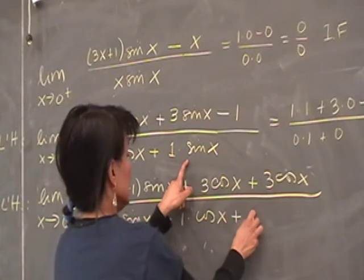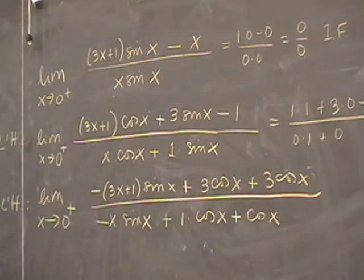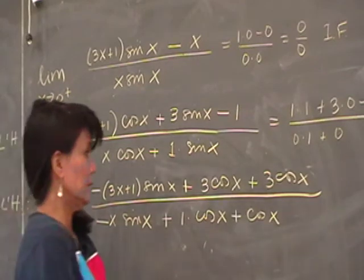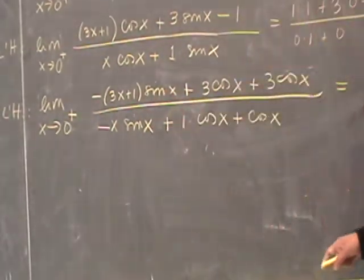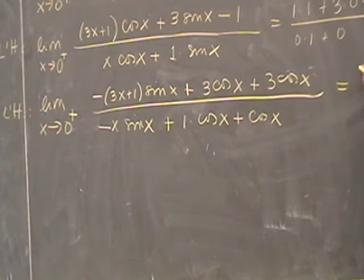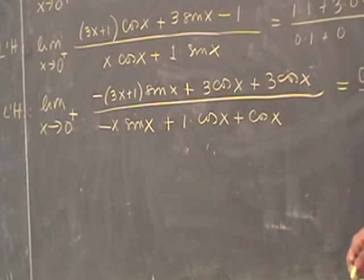Plus the derivative of sine x, which is cosine x. That first term will just be 0. The second term is actually a 3. The third is a 3. 3 times 1, 3 times 1.